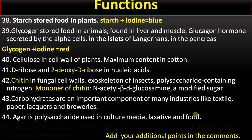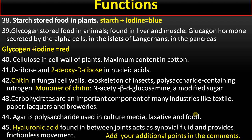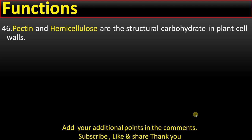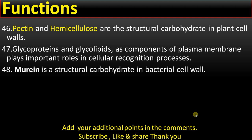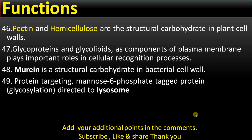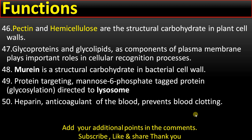Point number 45: hyaluronic acid is found between joints, acts as synovial fluid, and provides frictionless movement. Point number 46: pectin and hemicellulose are structural carbohydrates in plant cell walls. Point number 47: glycoproteins and glycolipids are components of the plasma membrane and play an important role in cellular recognition. Point number 48: murein is a structural carbohydrate in bacterial cell walls. Point number 49: carbohydrates are involved in protein targeting — if mannose-6-phosphate is attached to a protein, it is directed to the lysosome. Point number 50: heparin is an anticoagulant of blood that prevents blood clotting and is a carbohydrate.